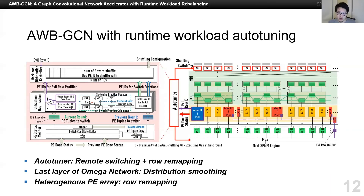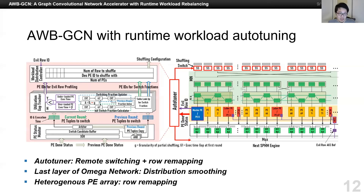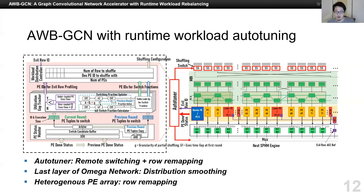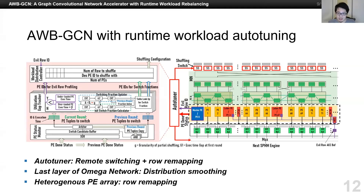This picture shows the architecture of our auto-tuning design. Comparing to the baseline architecture, the last layer of the omega network is equipped with extra wires for task sharing among neighbors, and we also add comparators to find which neighbor is least loaded — all for distribution smoothing. The pink module is the auto-tuner, which is in charge of looking for PEs with evil rows and PE tuples for workload switching, and also calculates and decides the switch fraction. The PE array also becomes heterogeneous compared to baseline. The blue PE is the master PE used to find the evil row ID and inform the auto-tuner. The auto-tuner then maps the evil row back to the red PEs, which can work on the evil row tasks distributively.